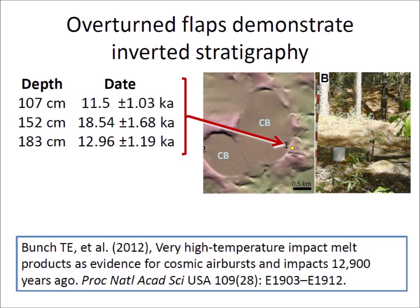The samples for optically stimulated luminescence were taken at 107, 152, and 183 centimeters below the surface. The layer at 107 centimeters had an age of 11,500 years, the layer at 152 centimeters had a date of 18,500 years, and the layer at 183 centimeters had a date of 12,900 years. This clearly shows inverted stratigraphy, since an older layer is sandwiched between two relatively younger layers.